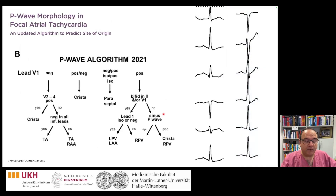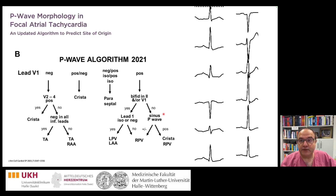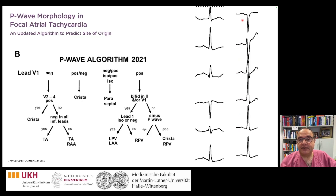This is one algorithm that we can use, and it was published in JACC EP in 2021. We see here that the P-waves in V1 to V6 are all positive — this means we have positive P-wave concordance, and this means that the PAC comes from the left atrium.